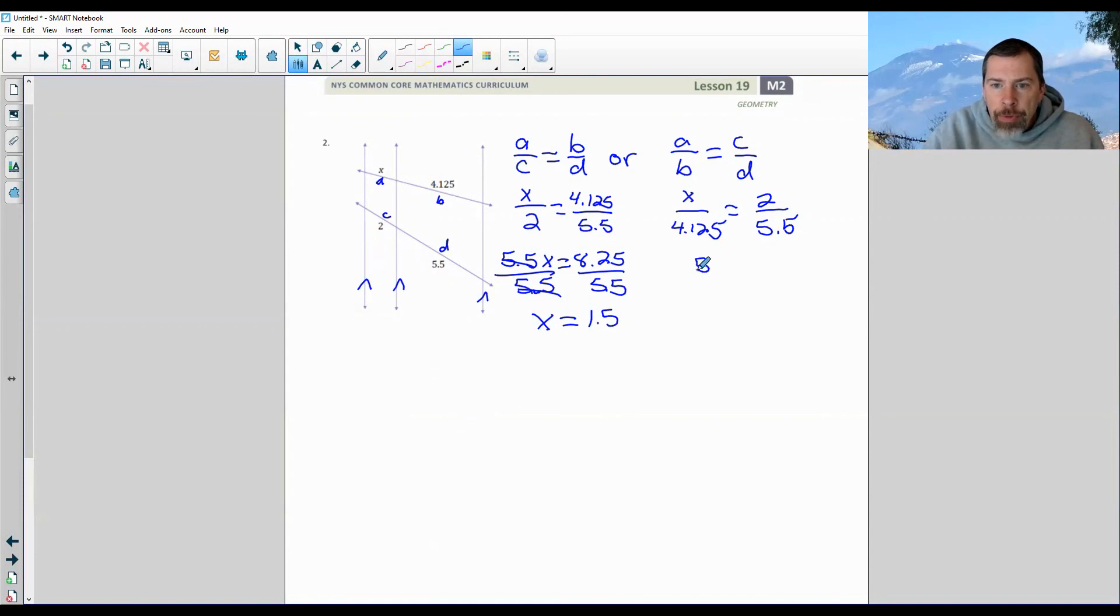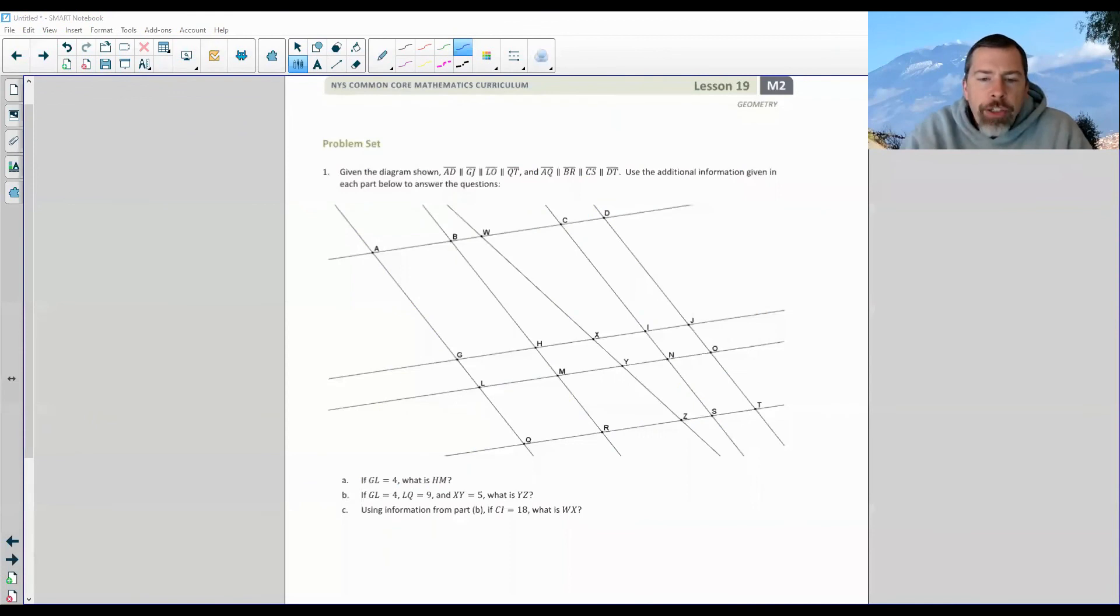Over here, I cross multiply and I will get 5.5x equals, and then 4.125 times 2 is 8.25. So notice that when we do this, our cross multiplication will give us the same numbers being multiplied to set up our equation. So this first equation here is the same as this one after cross multiply. Then we do the same step. Divide both sides by 5.5 and x equals 1.5. So either way, we get the same x. Okay, page 3 brings us to the end of this very short lesson, lesson 19. Review the lesson summary that there isn't. So don't review the lesson summary because there isn't one. Just go to your problem set. You're back.